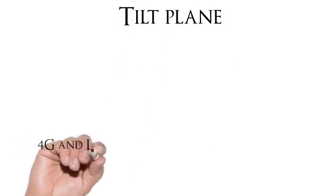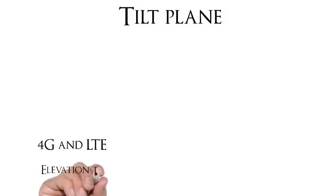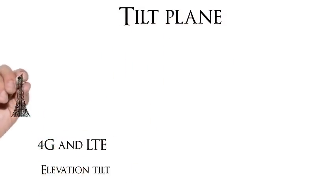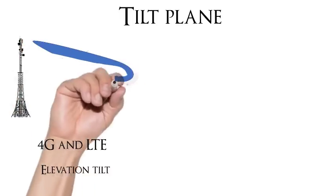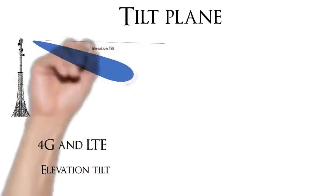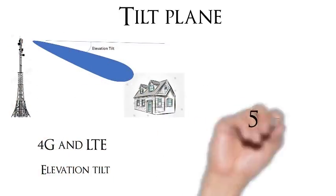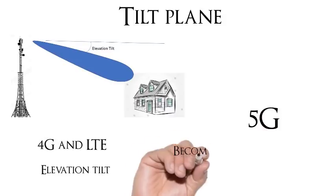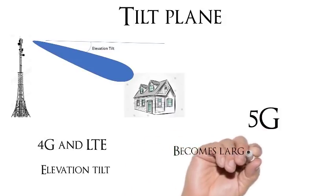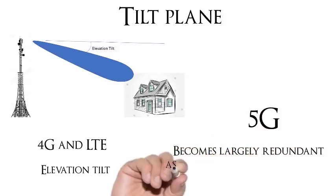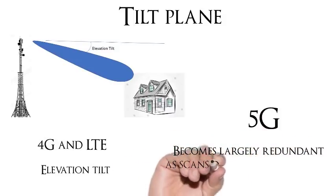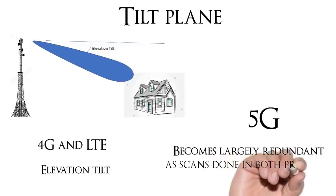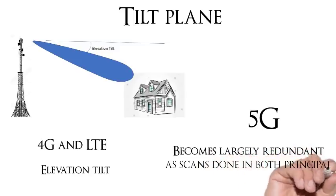Number 5: The tilt plane. For 4G and LTE, elevation tilt is applied — you can see the tower there with a beam pointing outwards, tilted towards the houses. Whereas for 5G, this becomes largely redundant, as the scans are done in both principal planes.